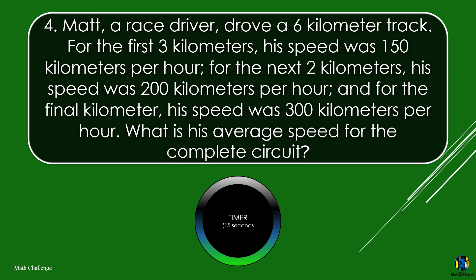Matt, a race driver, drove a 6-kilometer track. For the first 3 kilometers, his speed was 150 kilometers per hour; for the next 2 kilometers, his speed was 200 kilometers per hour; and for the final kilometer, his speed was 300 kilometers per hour. What is his average speed for the complete circuit?